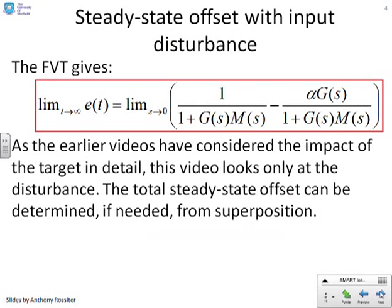Now, applying the final value theorem to the Laplace transform for E is given in this box up here. The limit as S goes to 0 of 1 over 1 plus GM minus alpha G over 1 plus GM. And you'll notice, to get this formula, we've used the substitution R equals 1 over S and D equals alpha over S. Now, the earlier videos looked specifically at the impact of the target, the signal R. This video, we're going to look only at the disturbance. If you want the total steady-state offset, then you use the formula above, because you can get it from superposition.